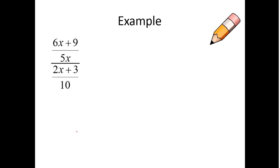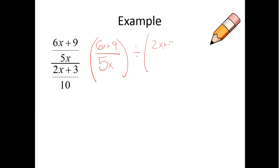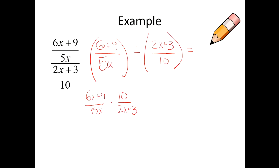So let's look with actual x's in it now. I got six-x plus nine over five-x divided by two-x plus three over ten. So what I'm going to first do is rewrite this into a division problem. So I'm going to have six-x plus nine over five-x divided by two-x plus three over ten. Now since I do not have any fractions in the numerator or denominator in either of these two fractions, what I can now do is keep the first fraction and multiply by the reciprocal. So I'll multiply by ten over two-x plus three. Then you're going to want to simplify and cancel what you can.